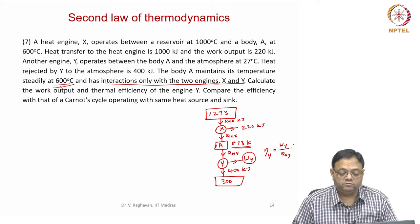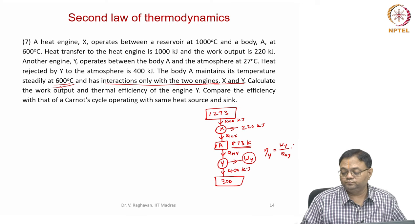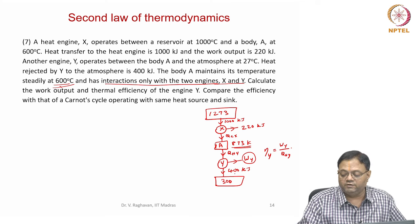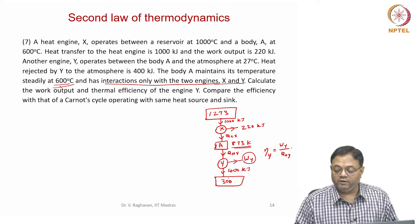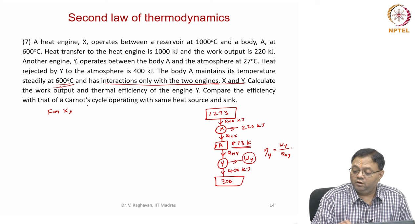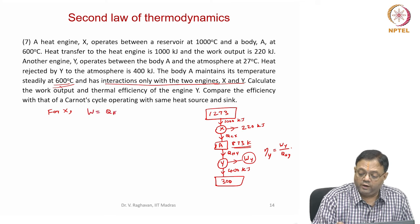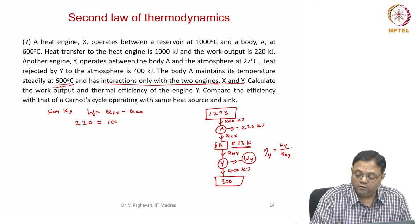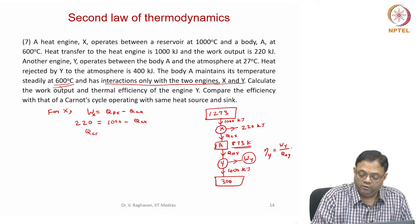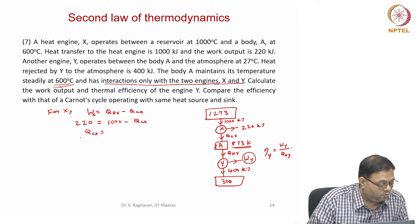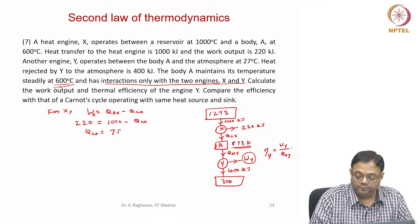We also compare the efficiency with the Carnot cycle operating between 873 K and 300 K. For engine X: WX equals QHX minus QCX. So 220 equals 1000 minus QCX, which gives QCX equal to 780 kilojoules.